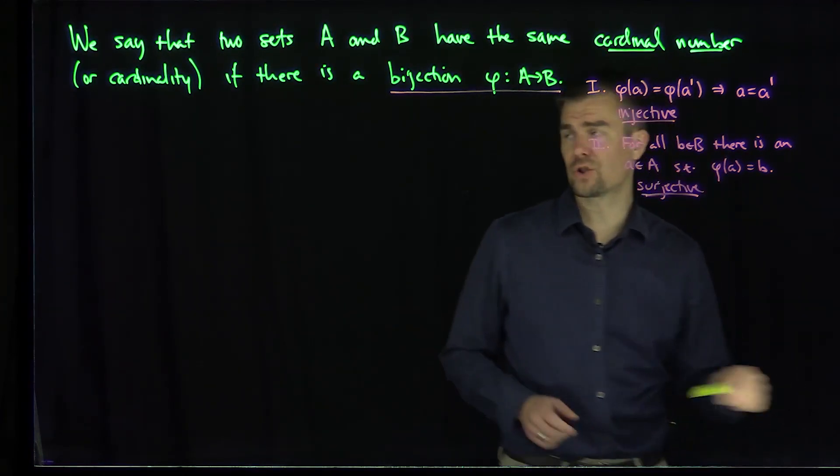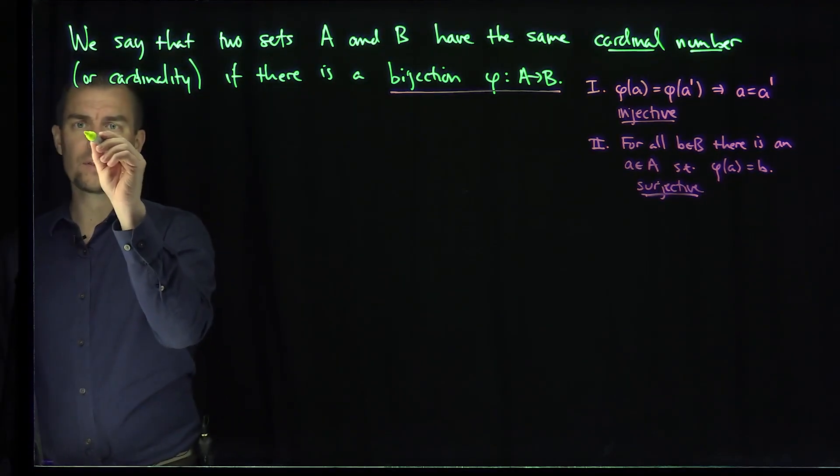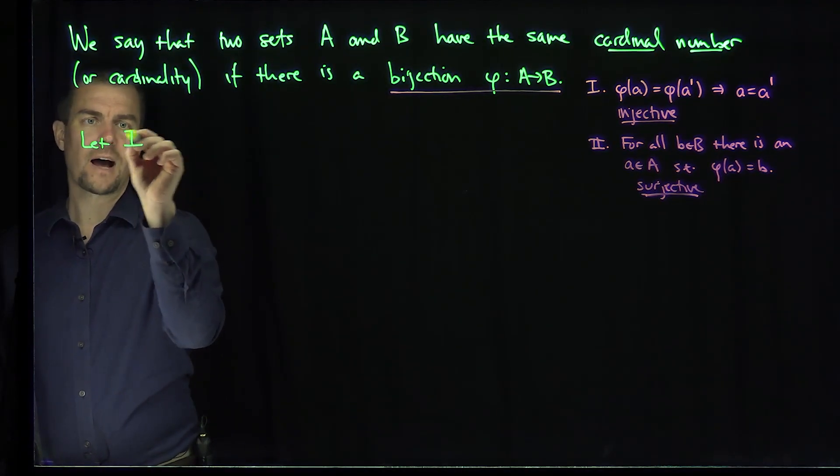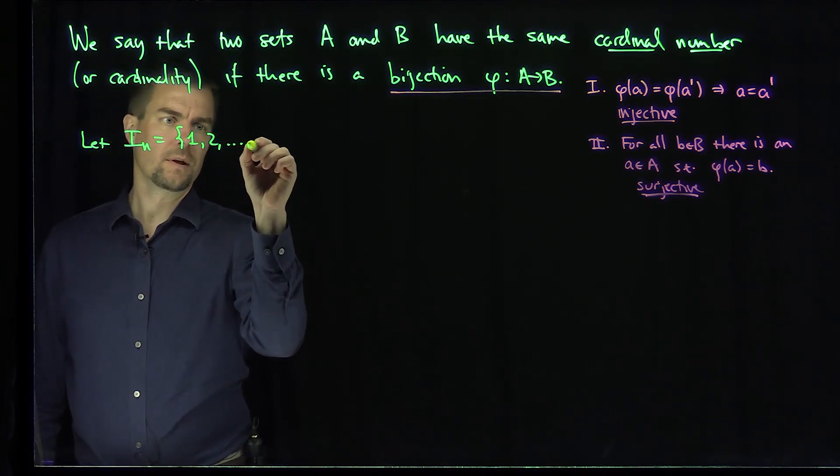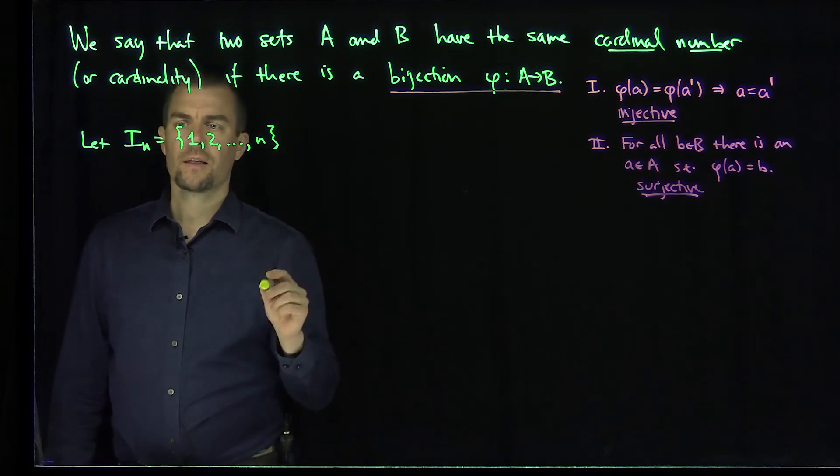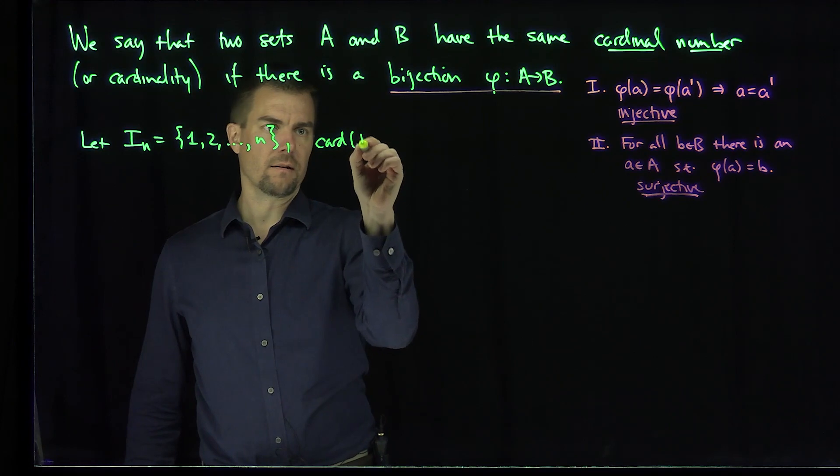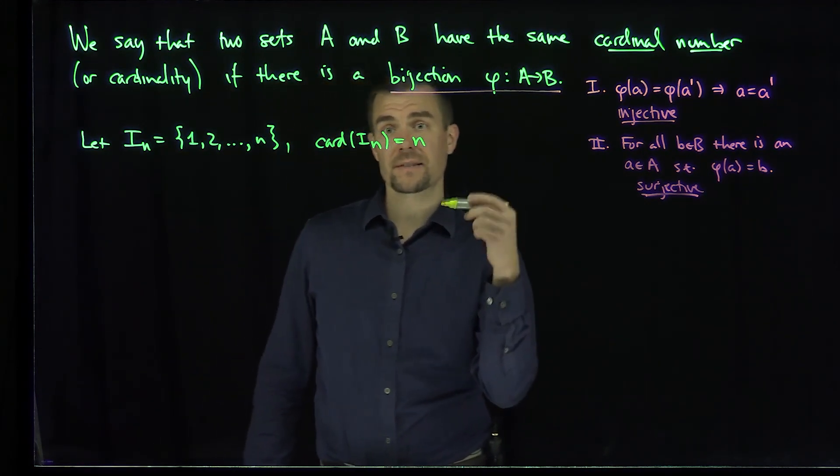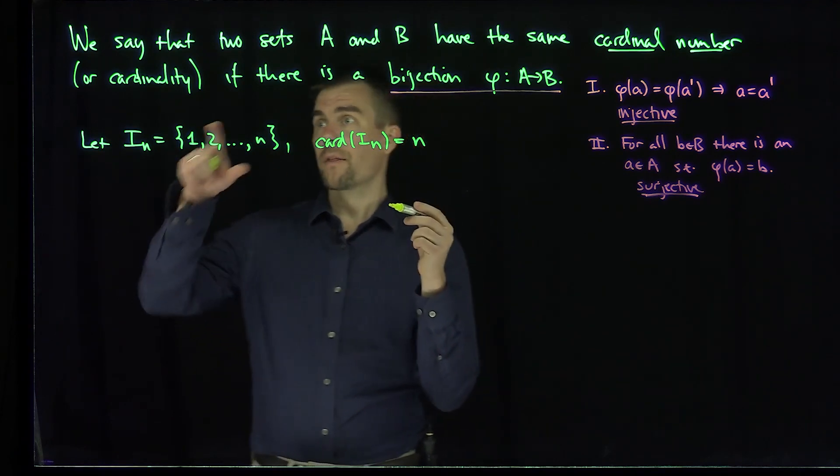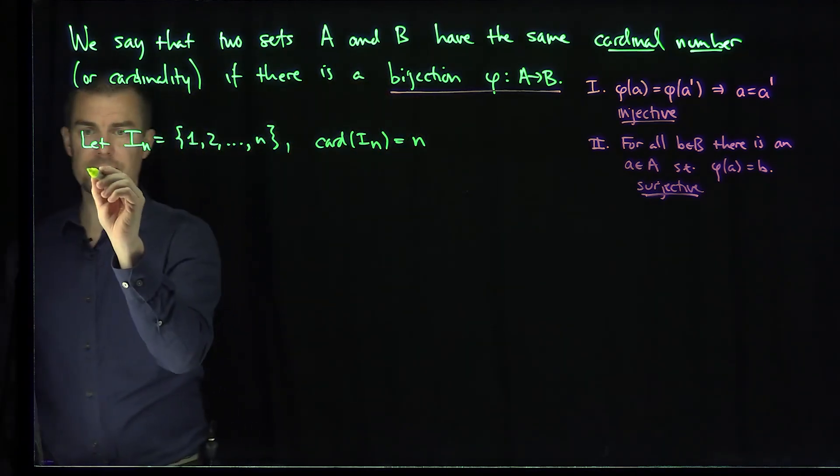There's some special terminology we have with cardinal numbers or cardinality. If I let I_n be the set 1, 2, up to n, then the cardinality of this set I_n is exactly equal to n. And we call these sets that have finite cardinality or that are bijective to I_n finite sets.